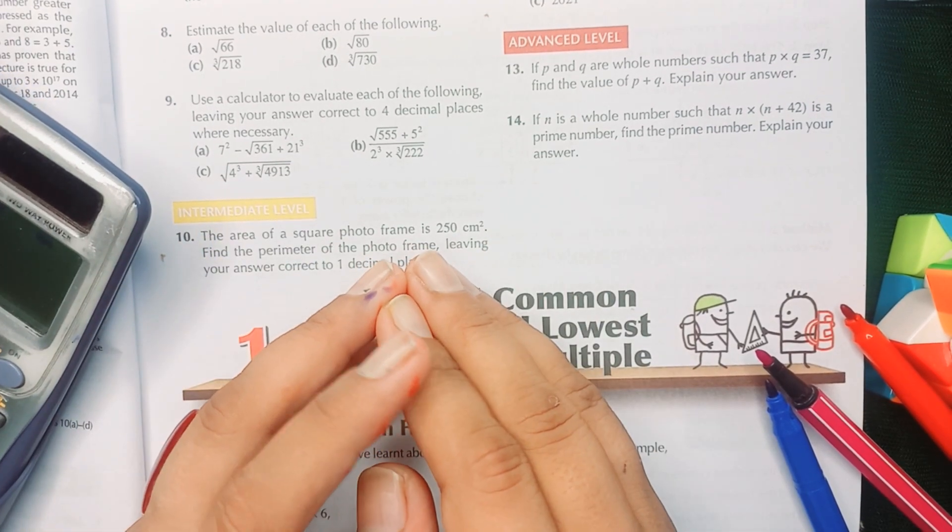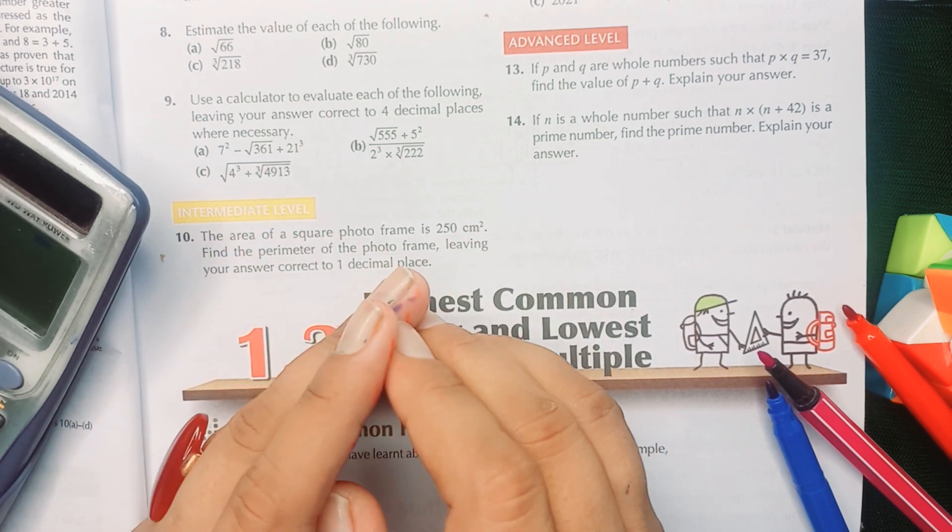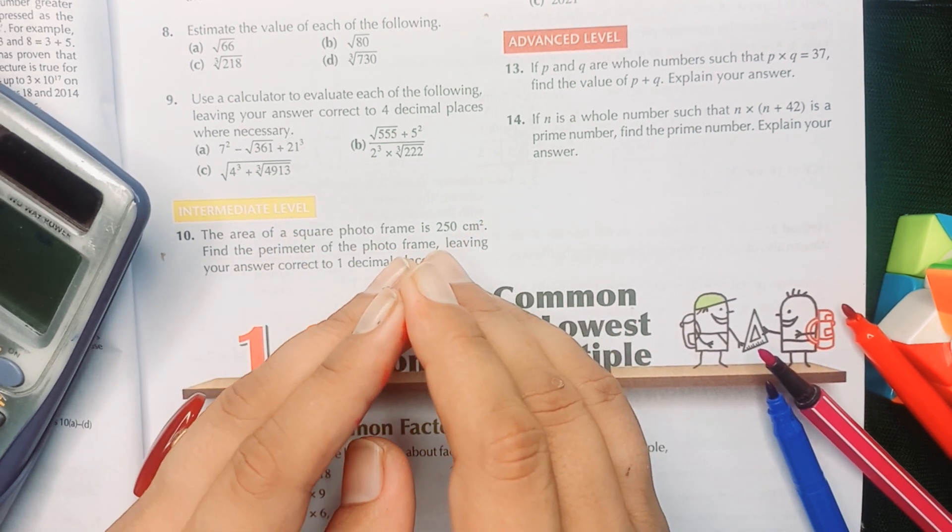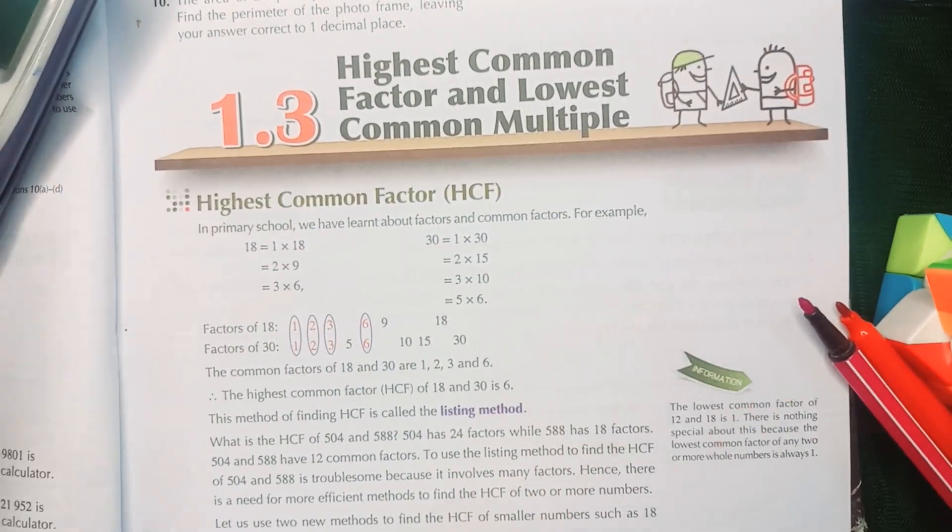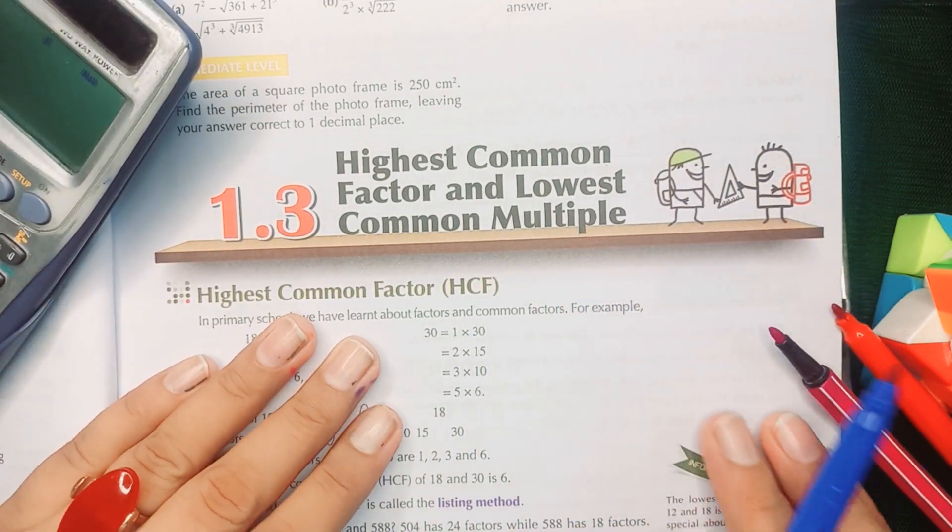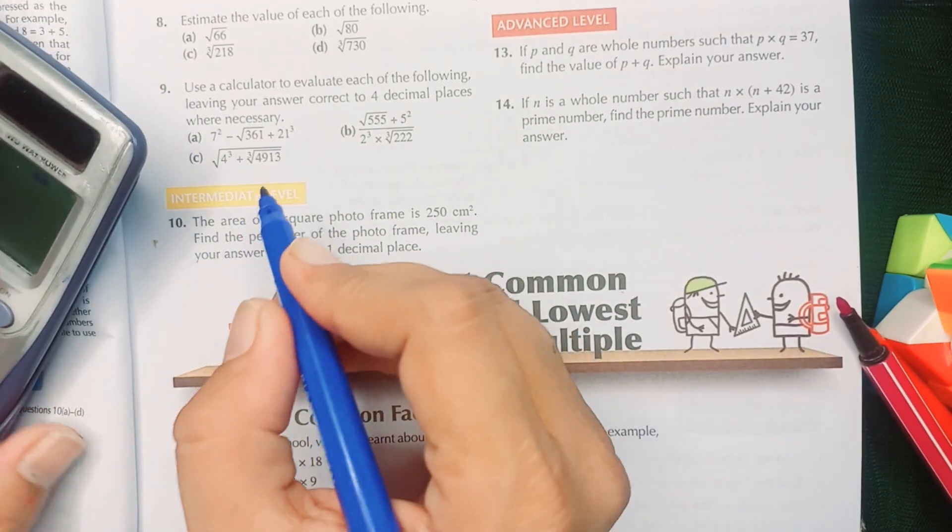Assalamu alaikum dear students, welcome to lecture series of New Secondary Mathematics 1 or D1. Today we will do question number 9 of Exercise 1a, and our chapter is Prime, Highest Common Factor, Lowest Common Multiples, and Integers.